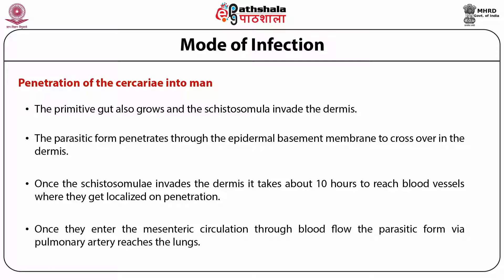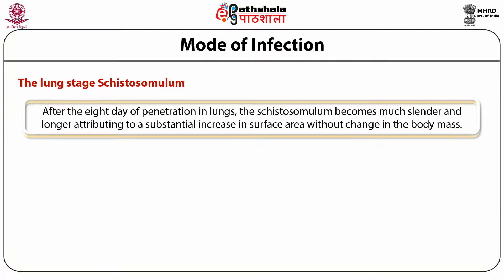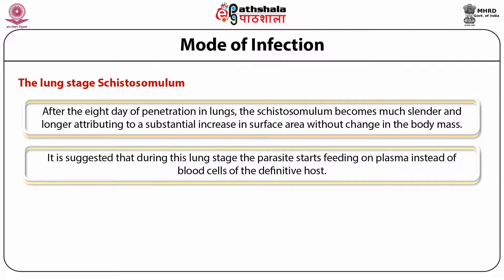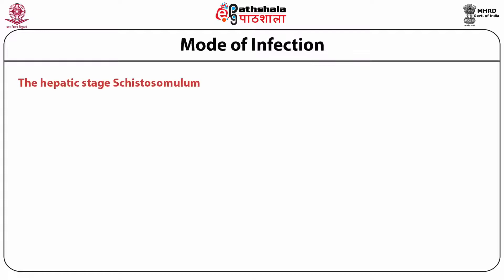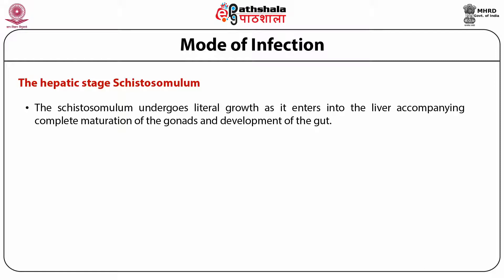Once the schistosomula invades the dermis, it takes about 10 hours to reach blood vessels where they get localized on penetration. Once they enter the mesenteric circulation through blood flow, the parasitic form via pulmonary artery reaches the lungs. After the 8th day of penetration, the schistosomulum in the lungs becomes much slender and longer, attributing to a substantial increase in surface area without change in body mass. During this lung stage, the parasite starts feeding on plasma instead of blood cells of the definitive host. The parasite further migrates to the hepatic portal vein through blood vessels and finally penetrates into the liver.